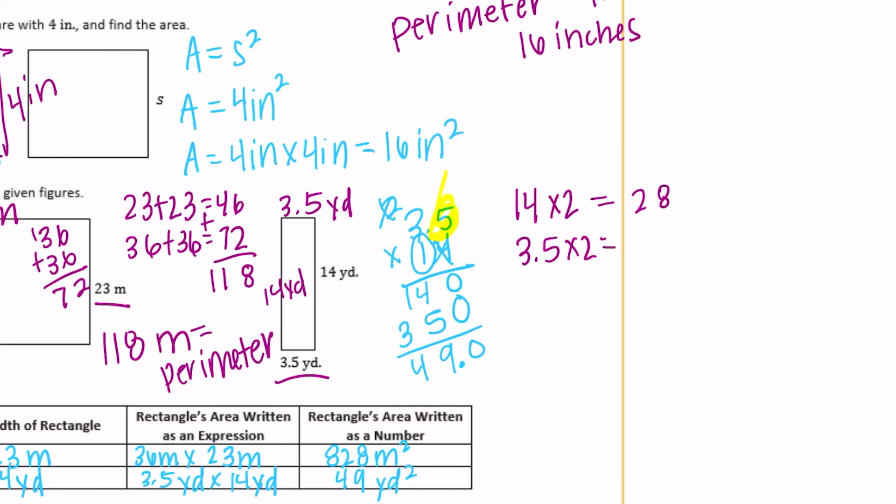So fourteen times two is twenty-eight. Three and a half, three times two is six, and a half times two is one. Add those together, we get seven. So twenty-eight plus seven would be thirty-five, so that's equal to thirty-five yards.